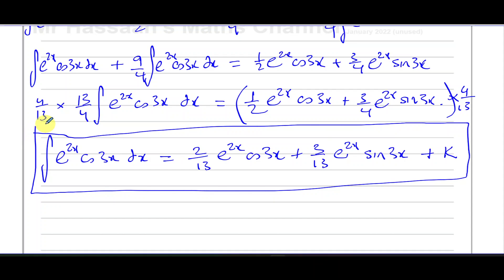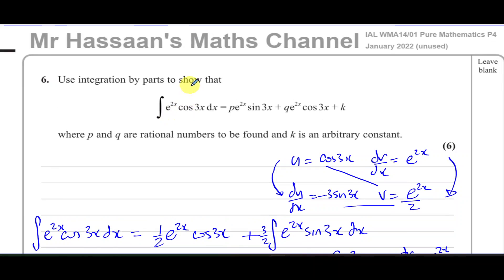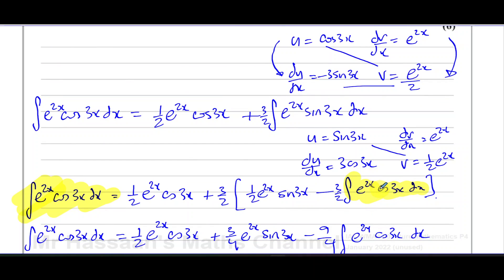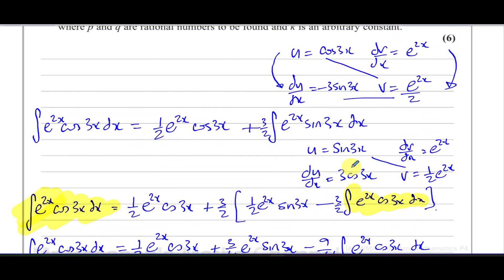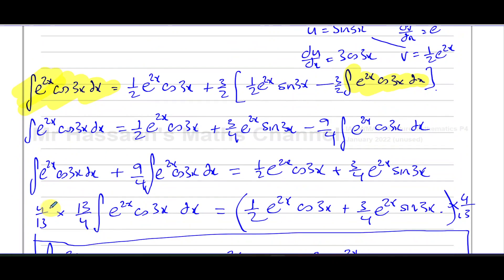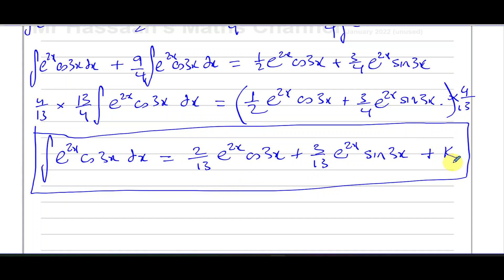It's not that difficult, just a bit different. You should spot straight away that integration by parts is needed, and that neither function will break down into something simpler — they'll keep repeating as e^(2x)·cos(3x) or e^(2x)·sin(3x). Once you reach the stage where the original integral reappears on the right-hand side, that's where you stop applying integration by parts, bring the like terms together, and solve for the integral as we just did.